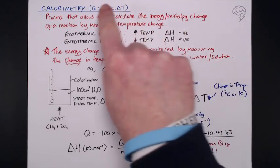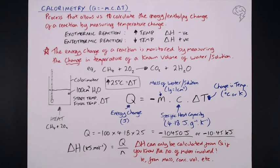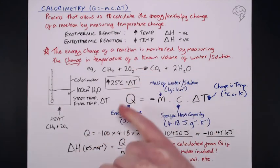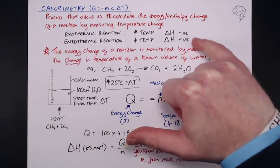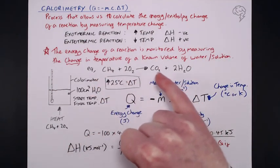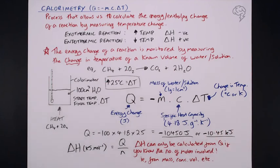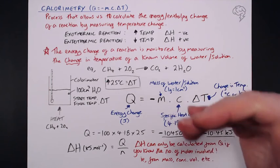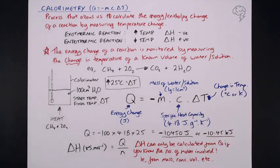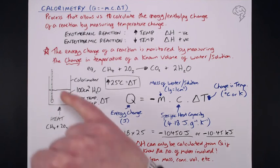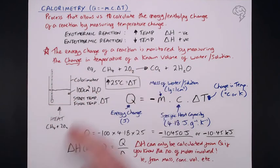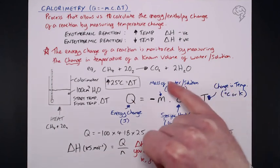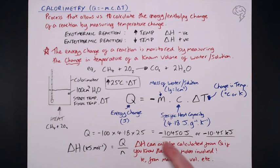So, overall, using calorimetry, it involves Q equals minus MCAT. That process allows us to calculate the energy change of a reaction by measuring temperature change. And don't forget these relationships, really important. So, we need to use a known volume of water or solution, a known body of water that we're heating up with the reaction, or indeed, cooling down in that reaction, depending on whether it's exo- or endothermic. So, any kind of setup that involves water, you can use calorimetry for. Q equals minus MCAT. Know what these things are. You're going to be reminded of this in a case of just putting your numbers in and getting your answer in joules. And, of course, then we can convert that into a delta H for the reaction if we know the number of moles. So, that's calorimetry.